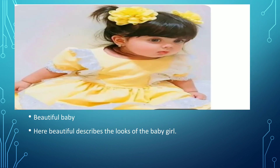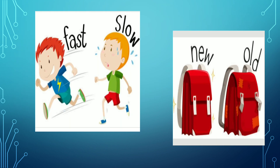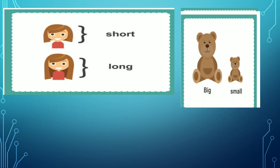Beautiful baby — here, beautiful describes the looks of the baby girl. So fast, slow, new, old are also adjectives. Short, long, big, small describe size, so they are also adjectives.